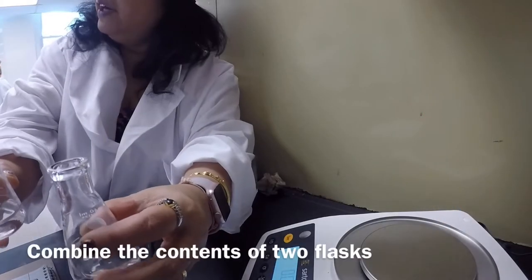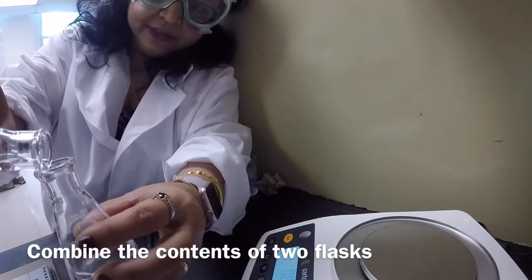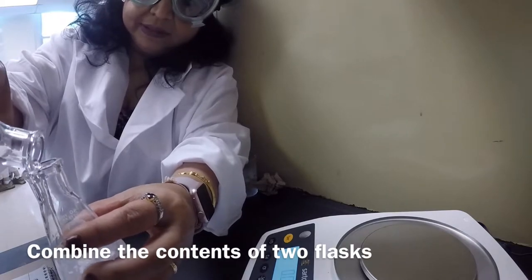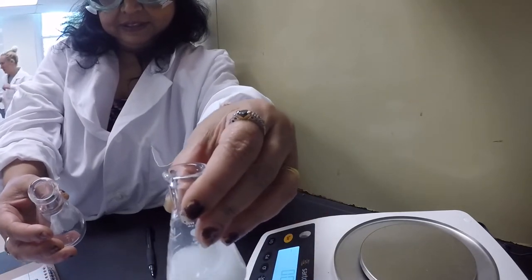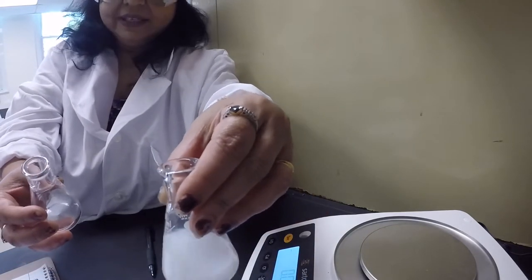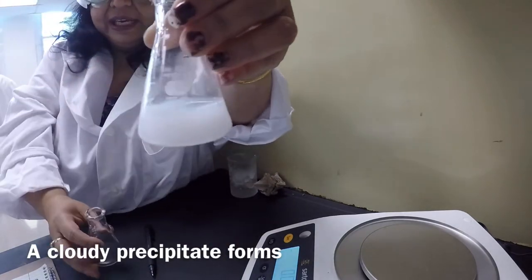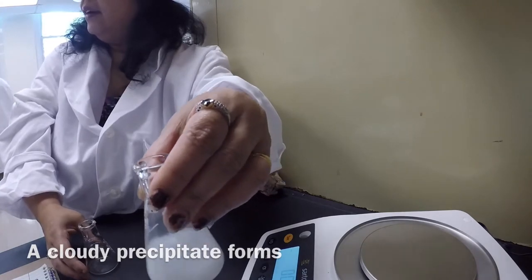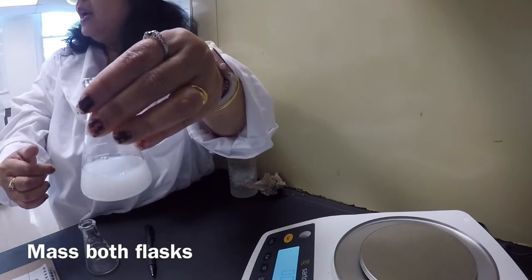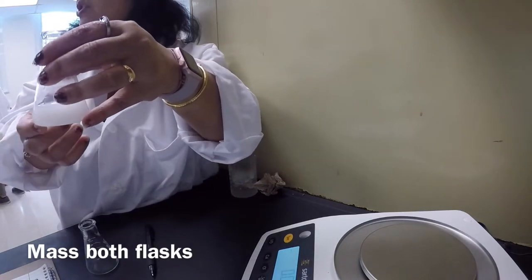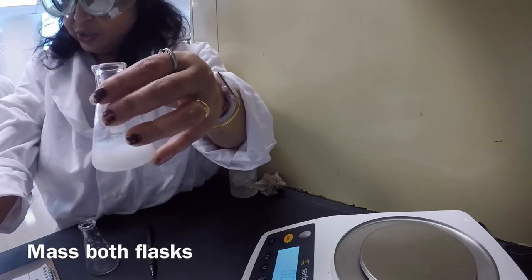So be very careful and start pouring one in the other. Just swirl a little bit, and we got something totally cloudy white in color. Okay, and what I'm going to do now is mass this flask with this solution and see if it weighs the same.